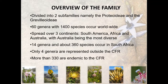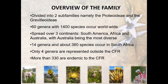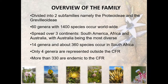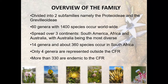Let's look at the overview of the family. They are divided into two sub-families, namely the Proteoideae and the Grevilleoideae. There are 60 genera and 1400 species that occur worldwide, spread over three continents: South America, Africa, and Australia, with Australia being the most diverse.